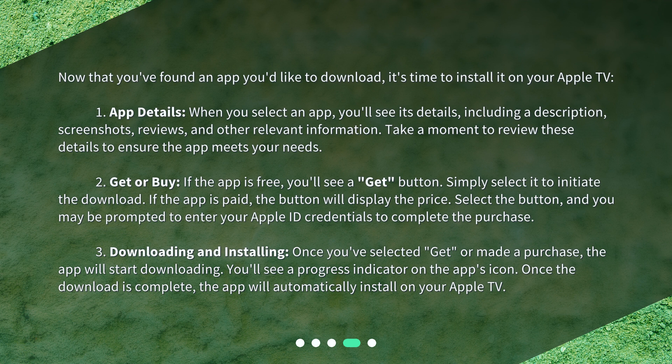Once you've selected Get or made a purchase, the app will start downloading. You'll see a progress indicator on the app's icon. Once the download is complete, the app will automatically install on your Apple TV.